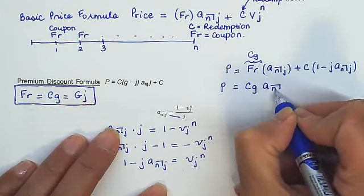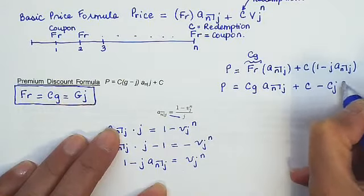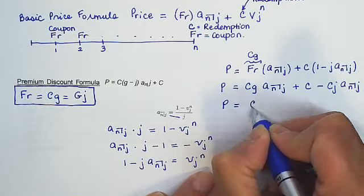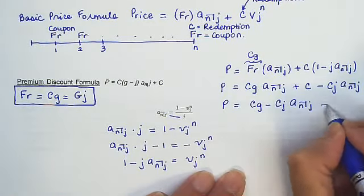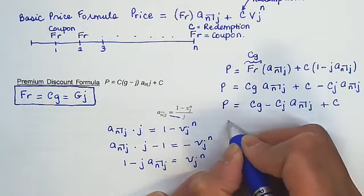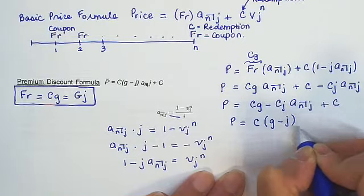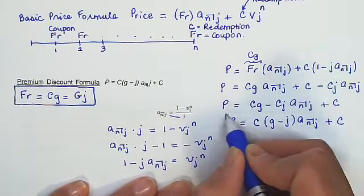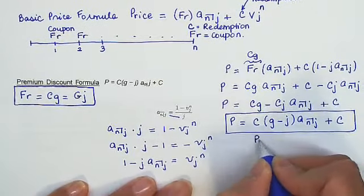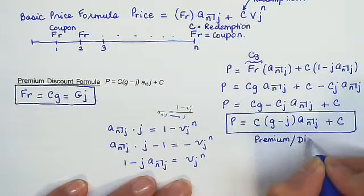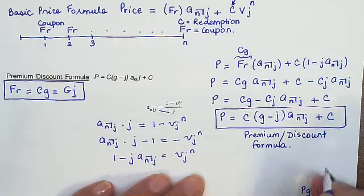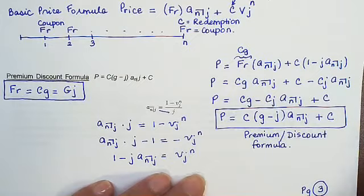So I get price equals CG A angle NJ plus C minus CJA angle NJ. Let's gather up the terms that have A angle NJ in them. So I have P equals CG minus CJA angle NJ plus C. Let's factor out the C. P equals C times (G minus J) A angle NJ plus C. That is your premium discount formula. And it's just an alternative, an alternate formula for price. The price of this bond.